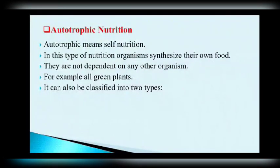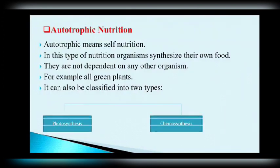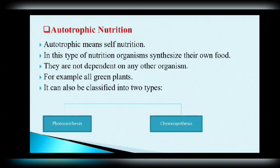Autotrophic nutrition can be further classified into two types: photosynthesis and chemosynthesis. Photosynthesis is the type in which organisms utilize sunlight to make their own food. Chemosynthesis — chemo means chemical — organisms here also make their own food but by utilizing inorganic compounds from the soil, like nitrogen and sulfur. Organisms that show chemosynthesis are mainly certain types of bacteria, while those showing photosynthesis include all green plants and some bacteria.